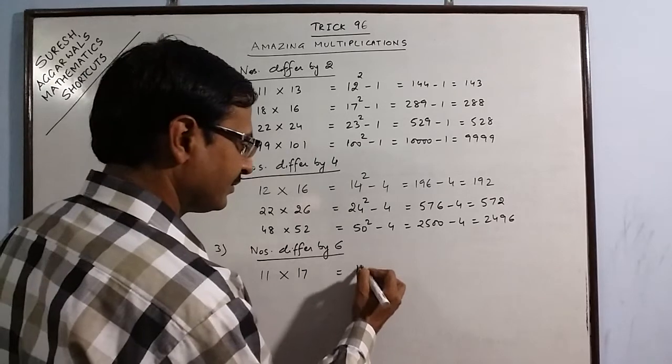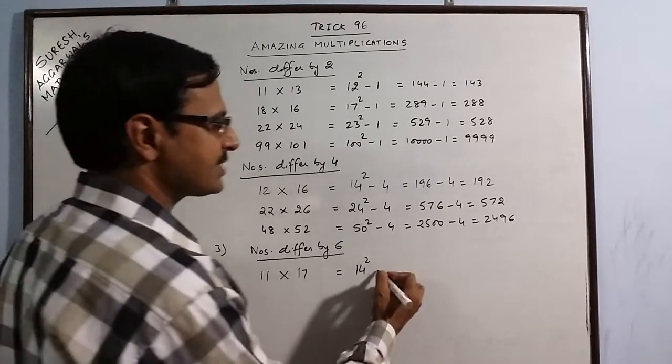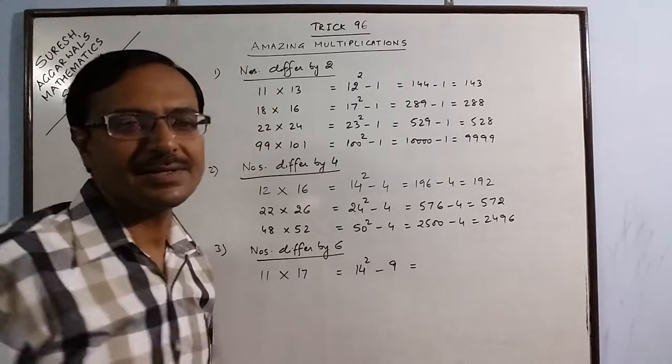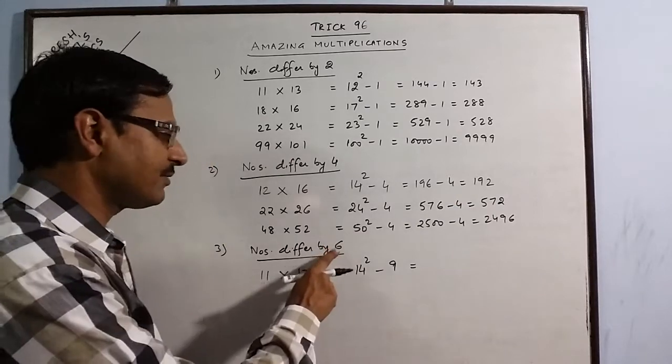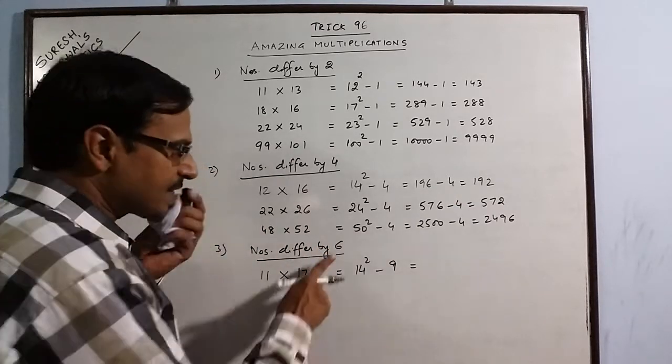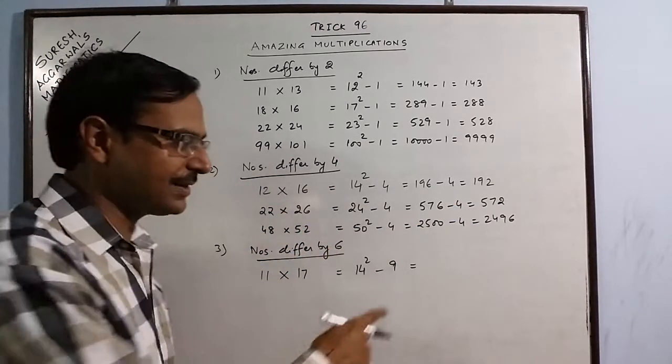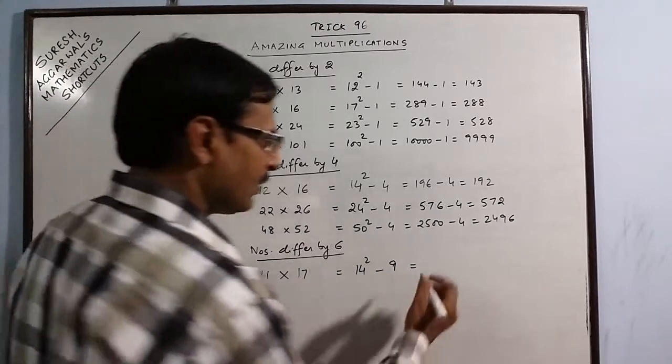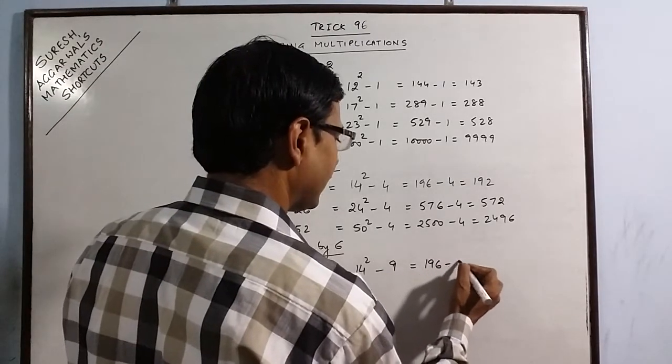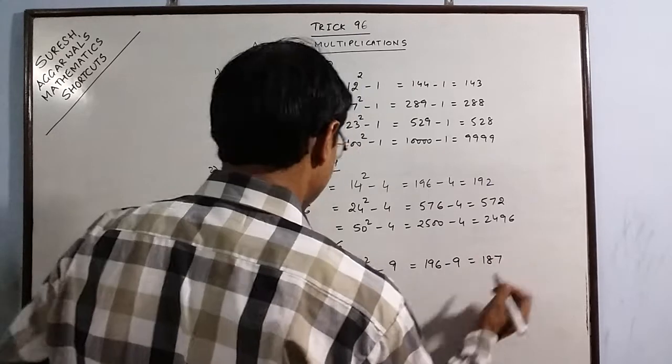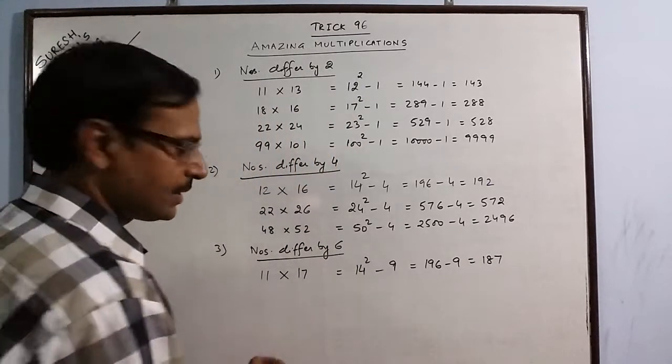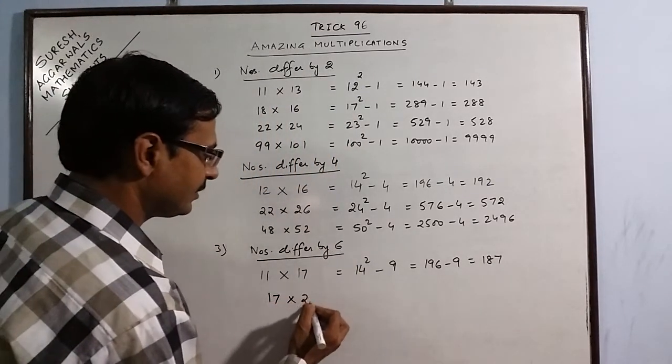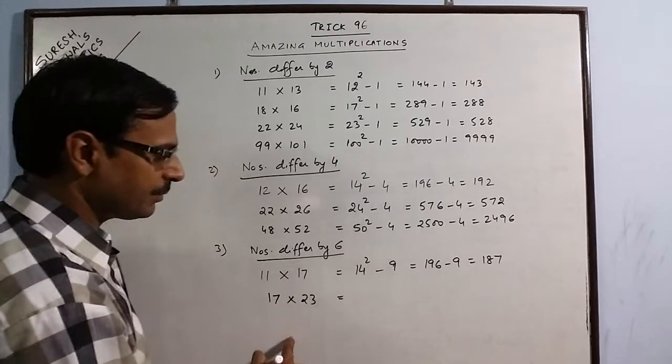14. 14 square and just subtract 9. In this case, you have to subtract 9 when the digits differ by 6. Half of 6 is 3, 3 square is 9, so subtract 9. 14 square is 196 minus 9: 187 is the product.